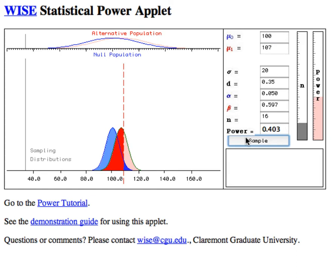So I click it once, hit sample, and we fail to reject the null hypothesis because the sample mean lies to the left of the critical mean value, which is 108.